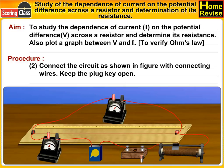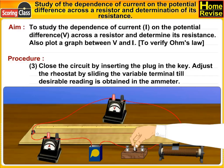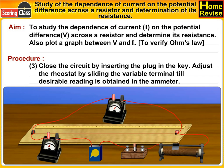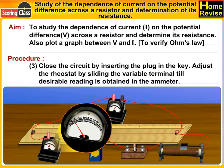Connect the circuit as shown in the figure with connecting wires. Keep the plug key open. Close the circuit by inserting the plug in the key. Adjust the rheostat by sliding the variable terminal till a desirable reading is obtained in the ammeter.